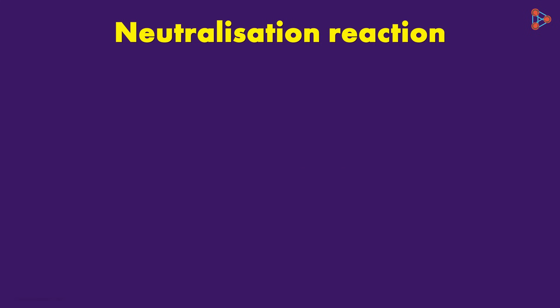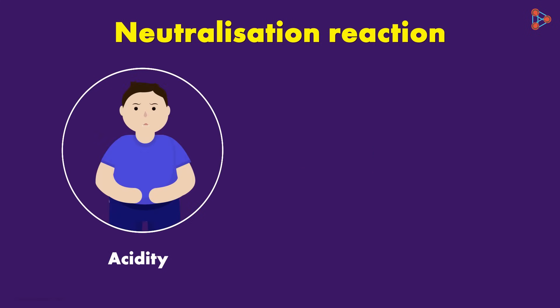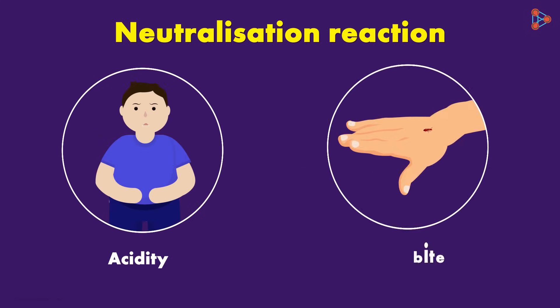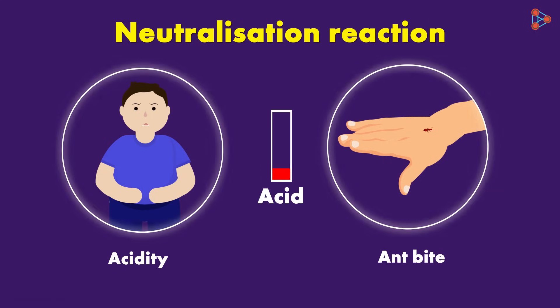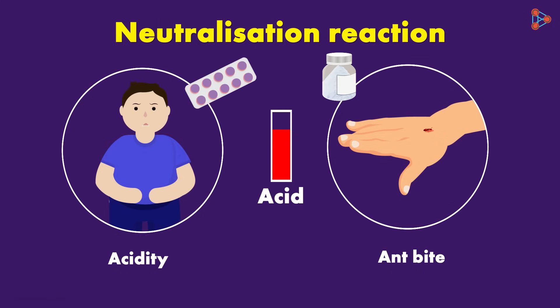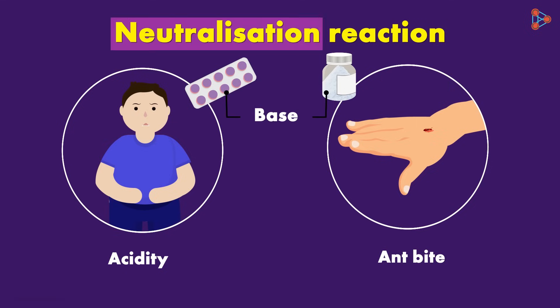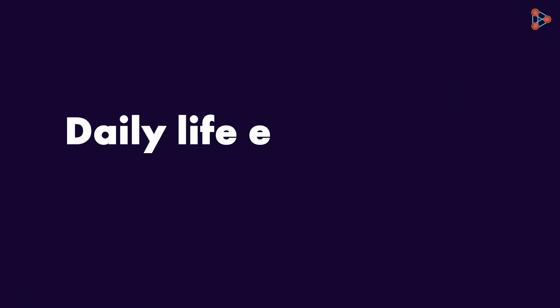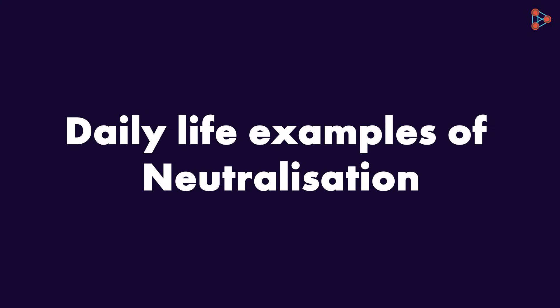For example, we usually find elders complaining about acidity, or ants biting us on the skin. These are examples where the percentage of acid increases inside or on the body compared to the normal value. Such cases are treated with medicines. But have you wondered how these medications work? They work based on the principle of neutralization. Next, let's have a glance at the various examples of neutralization reactions in everyday life.